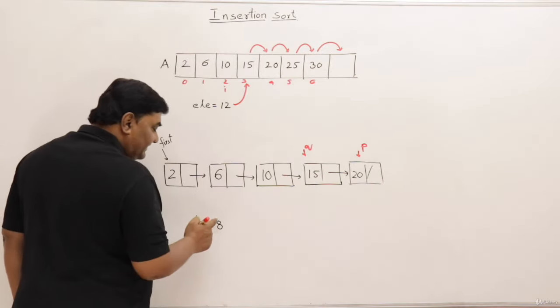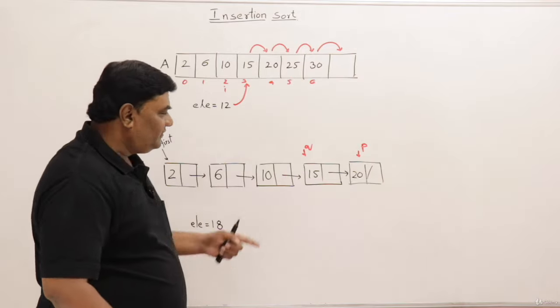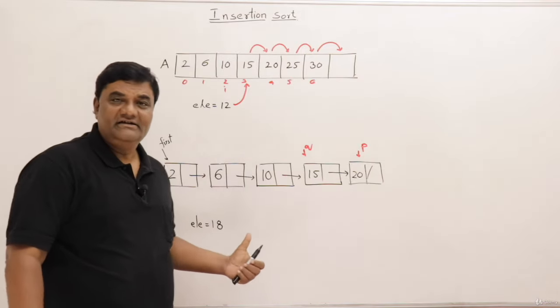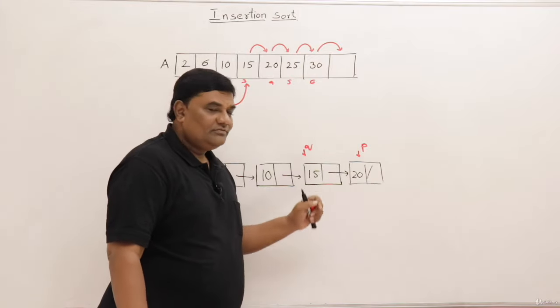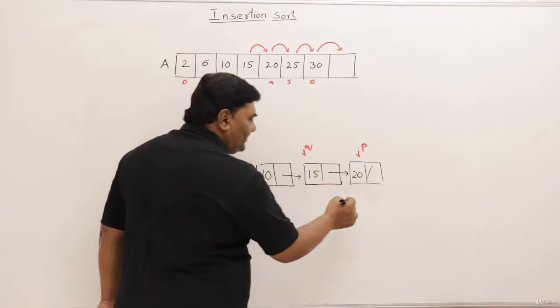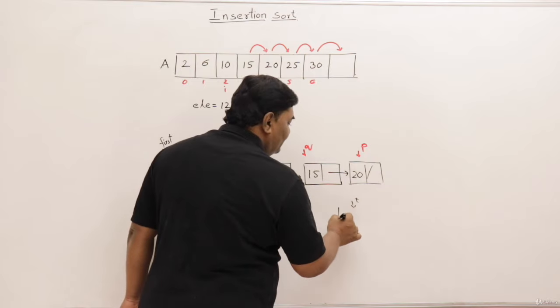Next. Now 20 is greater than 18. So we have found the first element which is greater than the key element that we are inserting. So we found its position. So it should be after Q. So for that, take one more temporary pointer and create a new node.